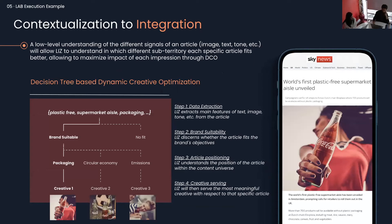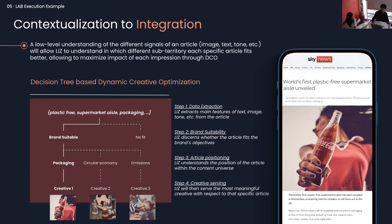Once we define the content territory for a brand, how do we move from contextualization to integration and ensure that format and creative are perfectly placed within publisher content? Just as we use LIZ to mine a brand's web page, we use LIZ to understand the different contextual signals of an article — analyzing imagery, text, tone — to understand which subterritory a specific article fits best, maximizing each impression. We follow a decision tree using DCO: first, data extraction — analyzing page features; second, brand suitability — determining article suitability to brand objectives; third, article positioning — understanding placement within the content universe; and fourth, creative serving — setting the most meaningful creative to the specific article page.